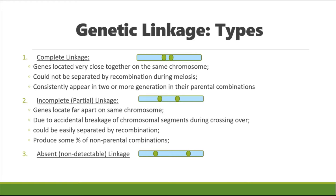Depending on the distance between the linked genes on a chromosome, there are three types of genetic linkage commonly observed. The first is complete linkage, wherein the genes are located very closely together on the same chromosome and cannot be separated by the process of recombination or crossing over during meiosis. This combination consistently appears across two or more generations in their parental combinations.